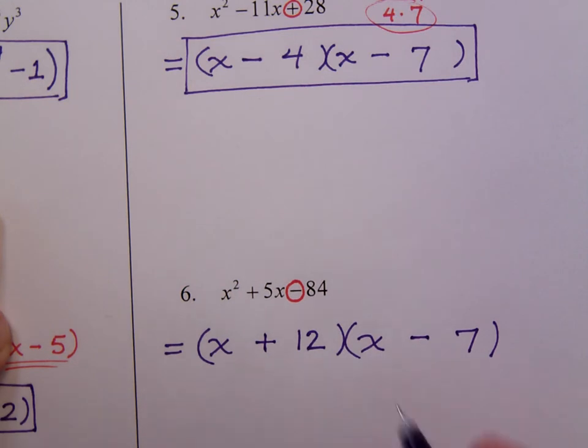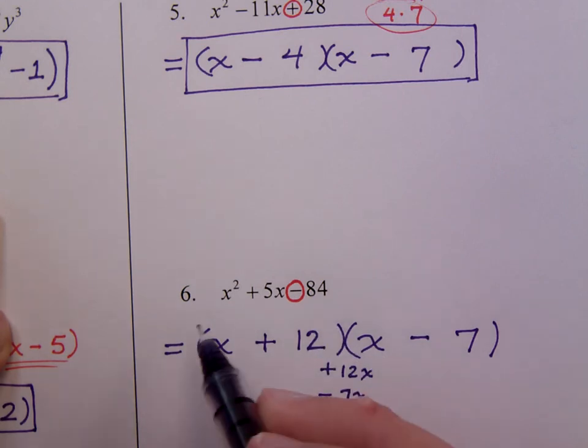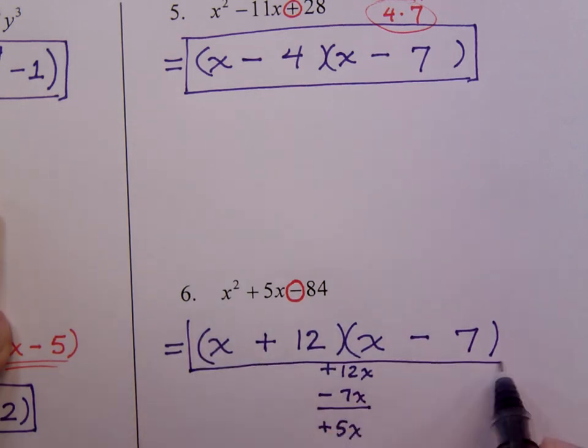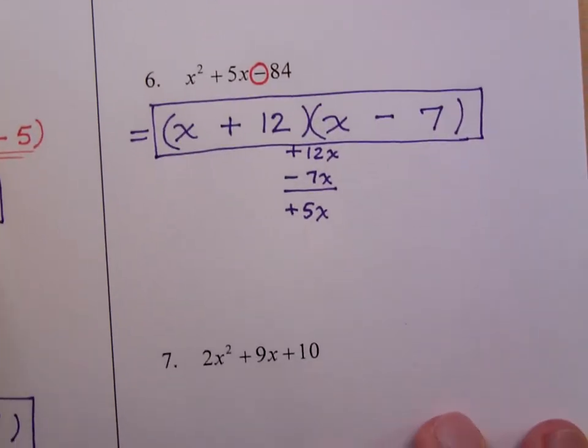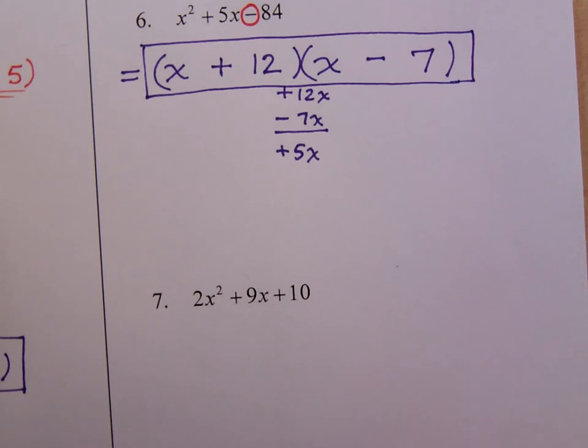So you can easily check this. This is a positive 12x in the middle, along with a negative 7x on the outside. And that's a positive 5x. Positive times a negative is going to give you that negative 84. It's a good thing we learned our multiplication tables way back when we were knee-high to a grasshopper. Number 7.